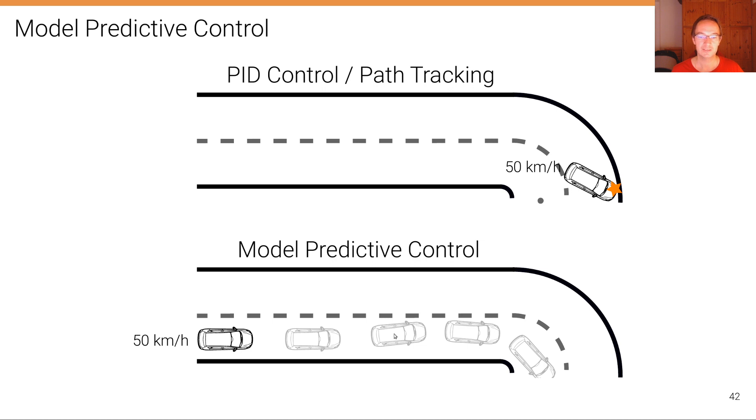It knows the entire trajectory into the future, as long as we have, let's say, a map or observations of the environment into the future. So we know already at this point that we have to decelerate in the future.